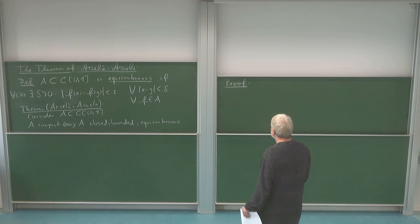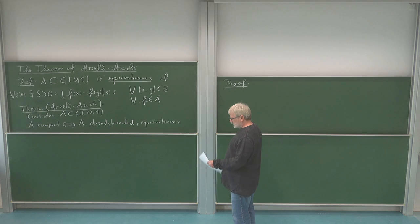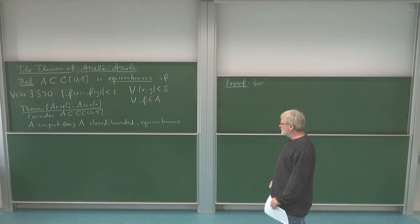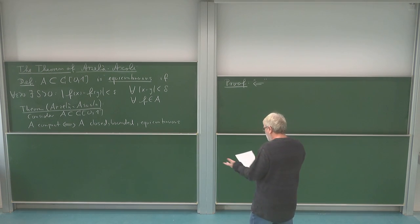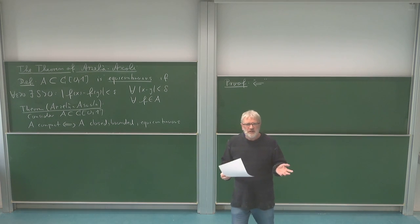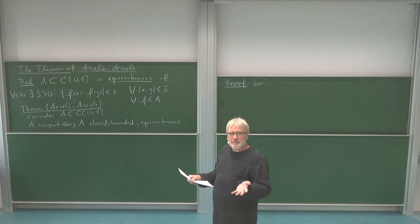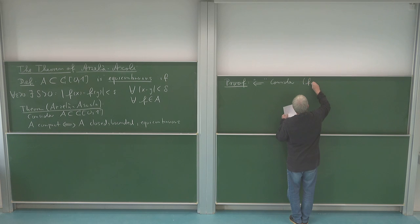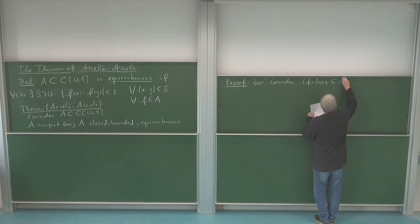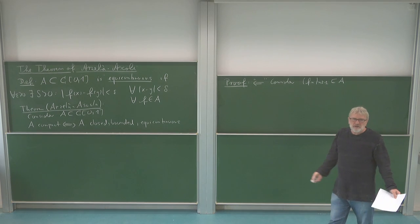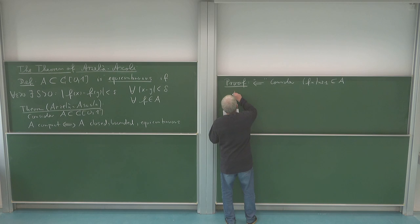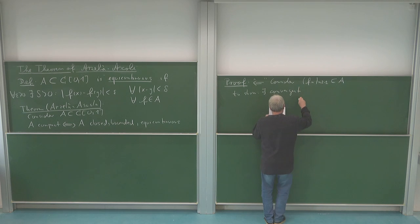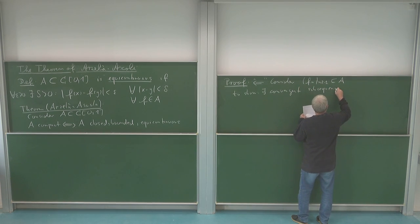Now we have to go for the interesting and harder direction of Arzelà-Ascoli. We assume our set A is closed, bounded, and equicontinuous, and we want to show it's compact. Compactness means we should show that any sequence in this set has a convergent subsequence. So we consider such a sequence, let's call it f_n — this is a sequence in A — and we have to show there exists a convergent subsequence.